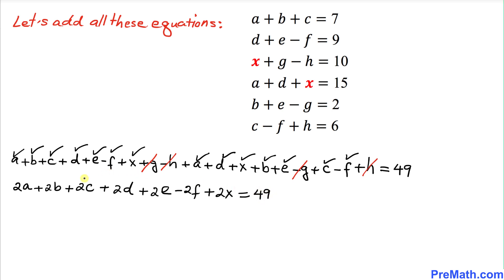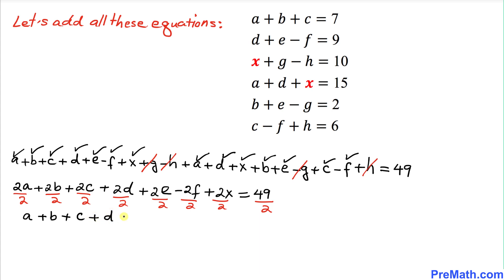All terms on the left-hand side are divisible by 2, so let's divide every term by 2 across the board. That gives us a plus b plus c plus d plus e minus f plus x equals 49 divided by 2, which is 24.5.